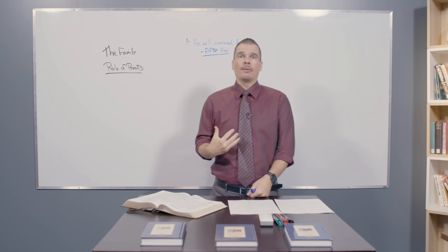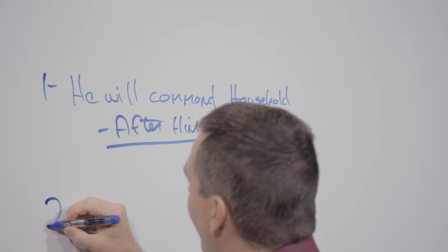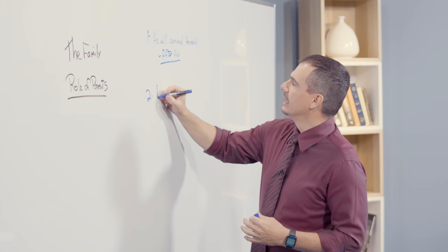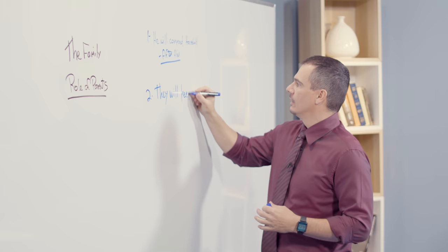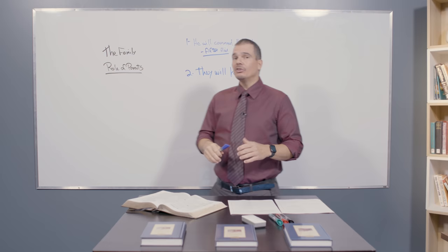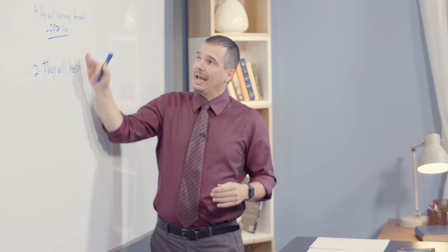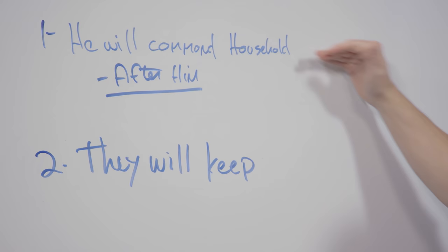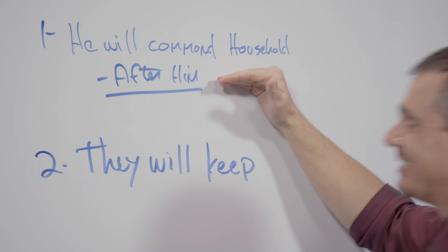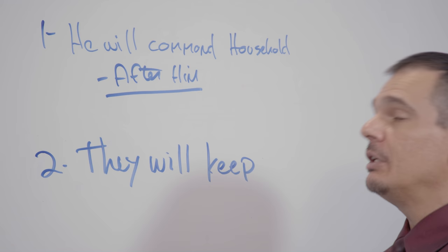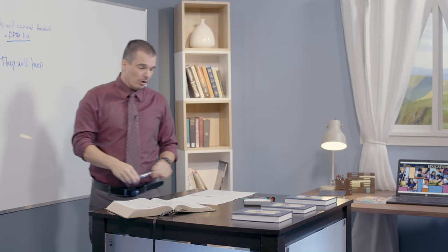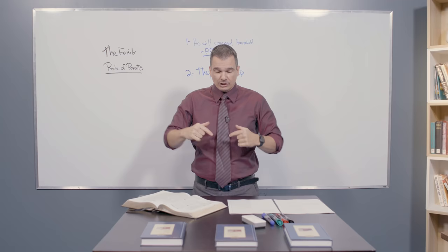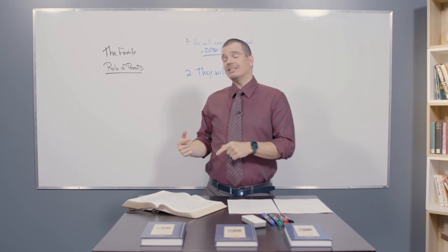And as a result of this, it says number two, that the family is whole household. It says that they will keep the judgment, the statutes, the law, the rules, whatever they're being taught according to Jesus. This is a reason why Abraham was chosen, because he would command his household well, he would be an example, and as a result of that, his whole household will actually follow and keep the laws of God. That's the type of head of family that God is still looking for, and that's the type of man that the devil is trying to stop from developing in society.